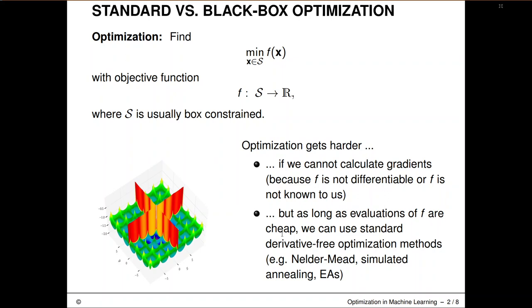But maybe f is not even known to us. So maybe f is simply a computer program. We can only evaluate f at some input vectors and observe the output, but that's the only thing we can do with it. And as long as these evaluations are somewhat cheap, so maybe we can evaluate this function in a few microseconds or a few seconds, then we can use the standard derivative-free optimization techniques that we have discussed here before.